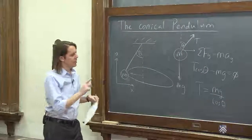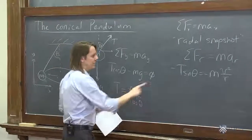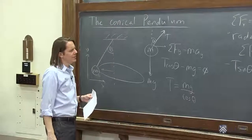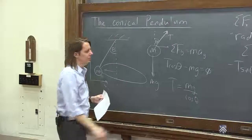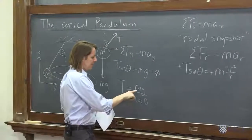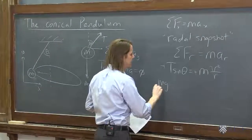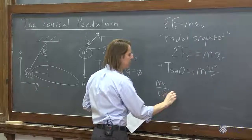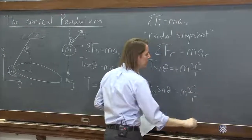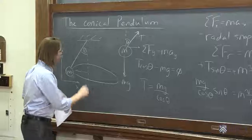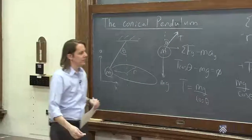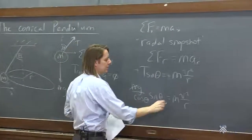So now we have two equations, two unknowns. We don't know the tension, and we don't know the velocity. So let's substitute this tension into this equation. Let's make them both positive. mg over cosine theta times sine theta equals mv squared over r. However, r is the radius of the circle, the circular motion. And the m's cancel.